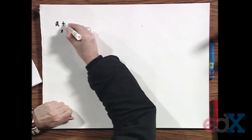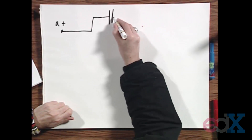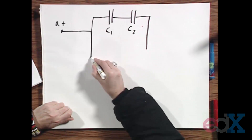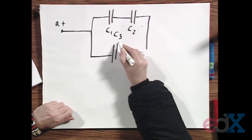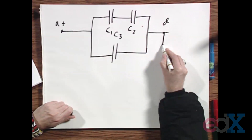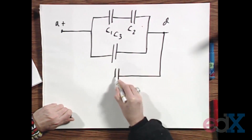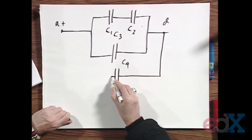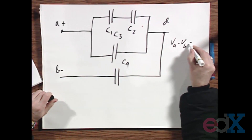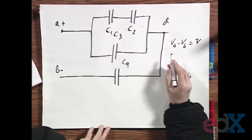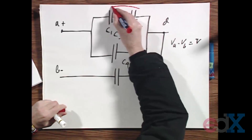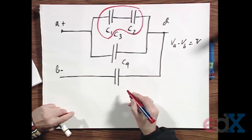Here we have point A positive, capacitors C1, C2, C3 — rather complicated — this point is called D, then C4, and here is B which is minus. The potential difference V_A minus V_B equals V. One of the questions is: what is the charge on each of these capacitors? The first thing I'm going to do is replace C1 and C2 by an equivalent capacitor.